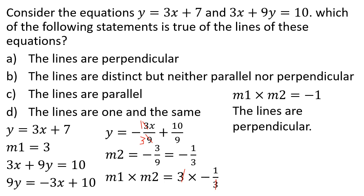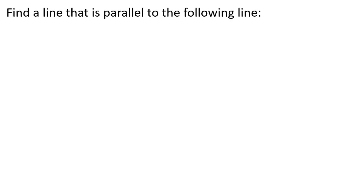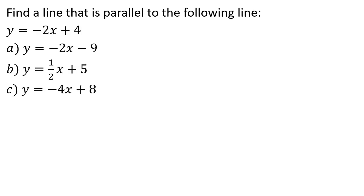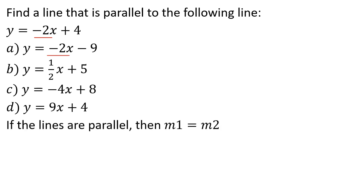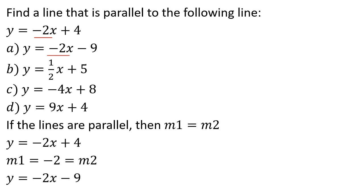Find a line that is parallel to y equal to minus 2x plus 4. The slope of this line is minus 2. For parallel lines, M1 equal to M2, so M2 is also minus 2. The answer is option A: y equal to minus 2x minus 9.